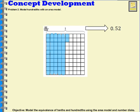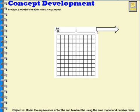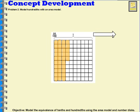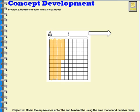Let's try another one — thirty-five hundredths. I would shade them in ten at a time: ten, twenty, thirty, and then five more. So now this area model is representing thirty-five hundredths. If I want to write this as a decimal, it would be zero point thirty-five. And if I read this, I read it just like this fraction: thirty-five hundredths.